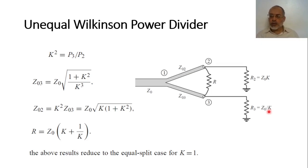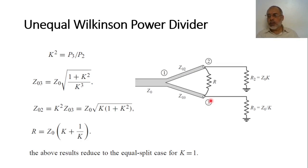If we are interested in matching to a characteristic impedance Z-naught, we should add a matching network — for example, a lambda-by-4 transformer — between this part and the Z-naught section.